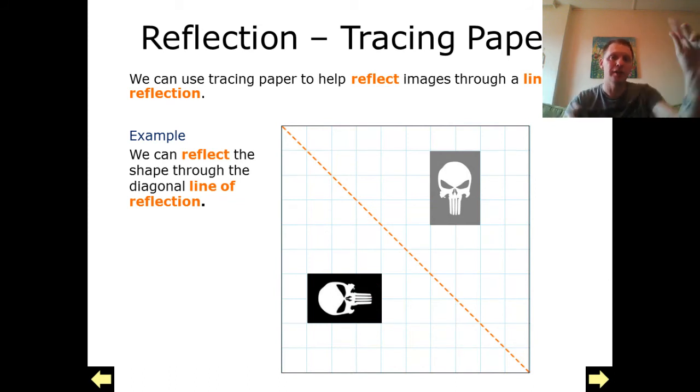I'm going to be turning it upside down. So matching my line of reflection now, it will automatically put my shape exactly where it needs to go.